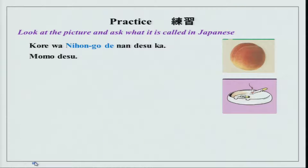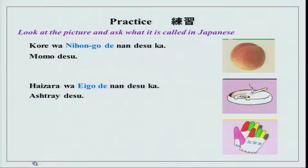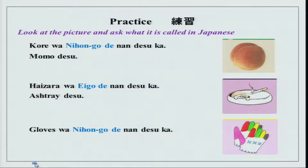We have another picture — ashtray or haizara. Haizara wa eigo de nan desu ka? Ashtray desu. Now we have another picture — gloves. Gloves wa nihongo de nan desu ka? Tebukuro desu. This is how you can ask anything about what it is called in a certain language.